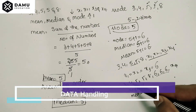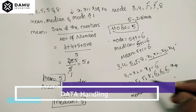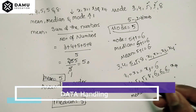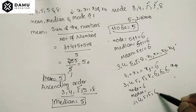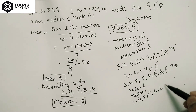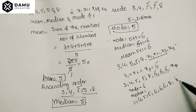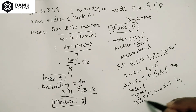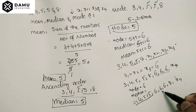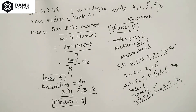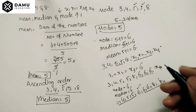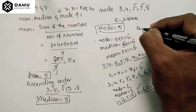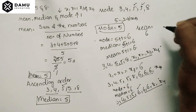Writing the known numbers in ascending order: three, four, five, five, six, six, six, eight, and x4. With nine numbers, removing the first four and last four leaves the fifth value as the median — which is six. This confirms the median condition. Now we calculate the mean to find x4.